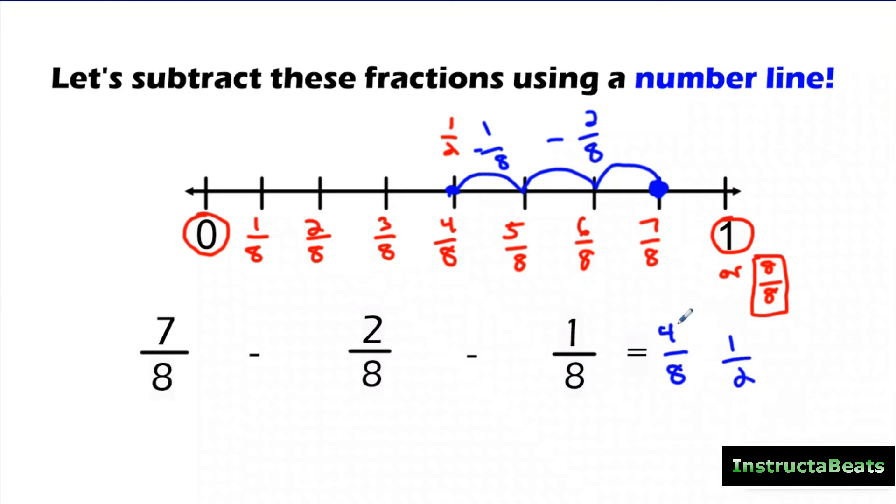But don't worry about simplifying if you're not there. This is all about just subtracting. And if you look at this, 7 minus 2 is 5, minus 1 is 4. So that's how we do it on a number line. You can also see down here I checked it using the algorithm. So let's get into that because I think you're going to find that a little bit quicker. And most of you are probably going to want to use that.